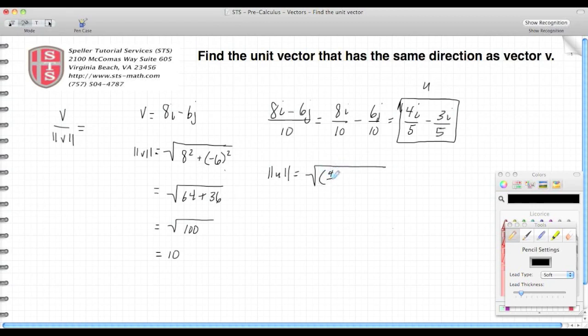So 4 fifths squared plus negative 3 fifths squared.